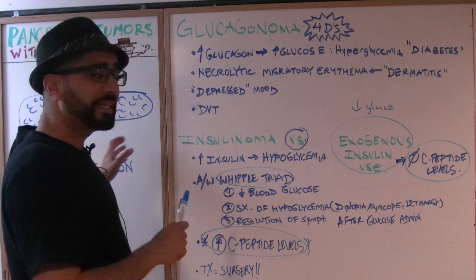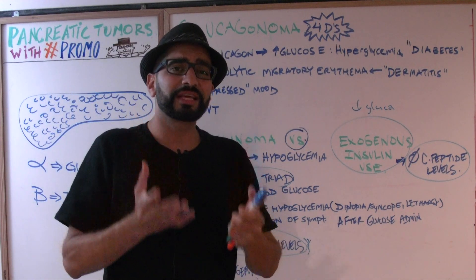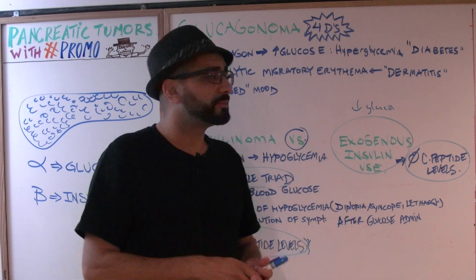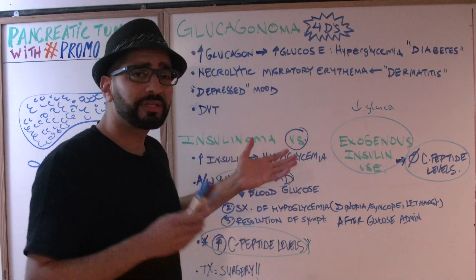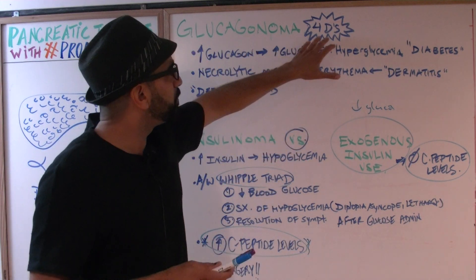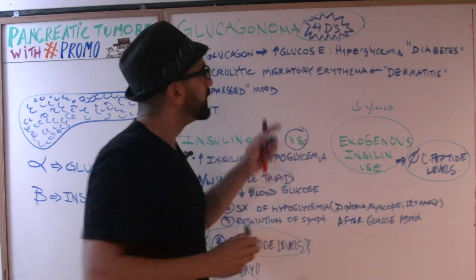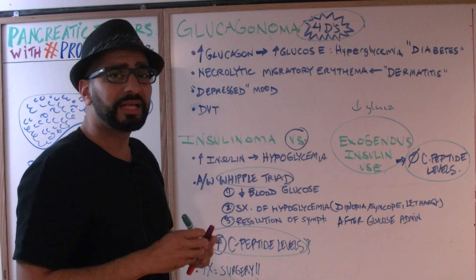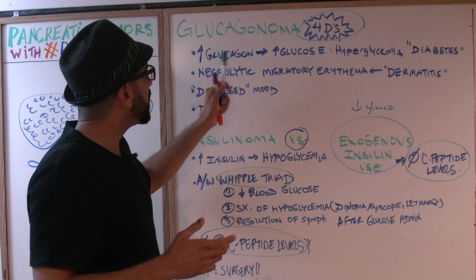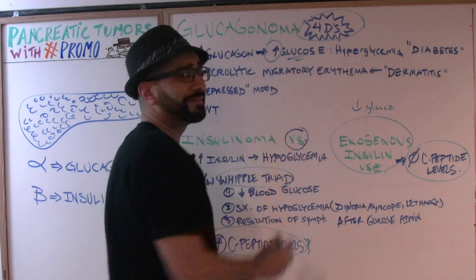Glucagonoma is secreted by the alpha cells. Glucagon is going to break down all the glycogen into glucose, so of course we're expecting hyperglycemia. How are we going to remember the signs and symptoms of glucagonoma? Think of the four D's. D number one: diabetes. It mimics diabetes, which means the patient is going to have hyperglycemia due to increase in glucose levels.